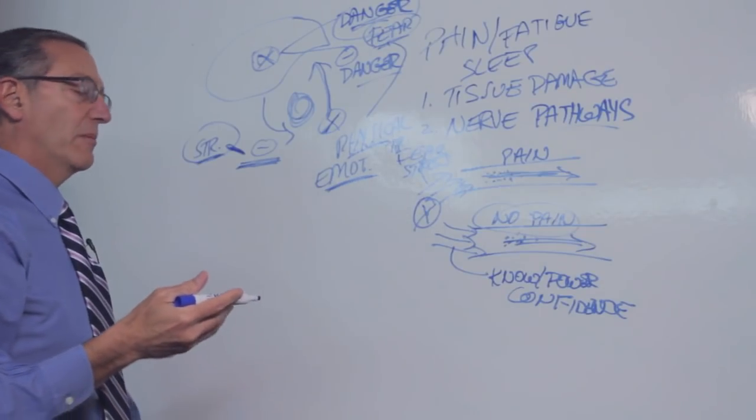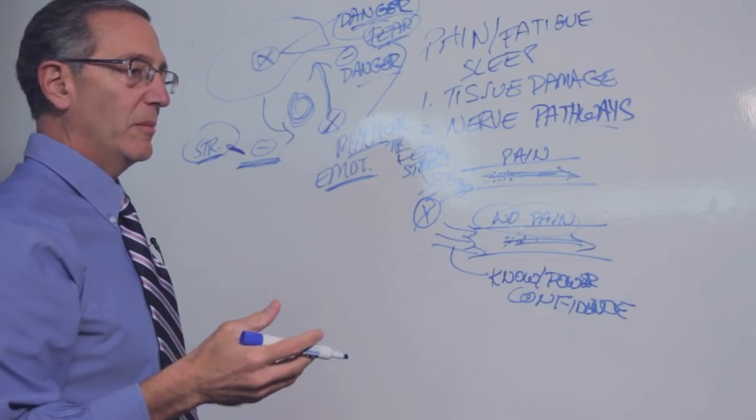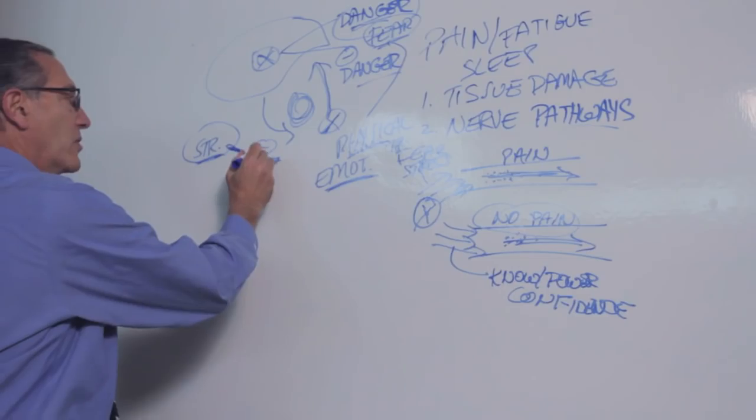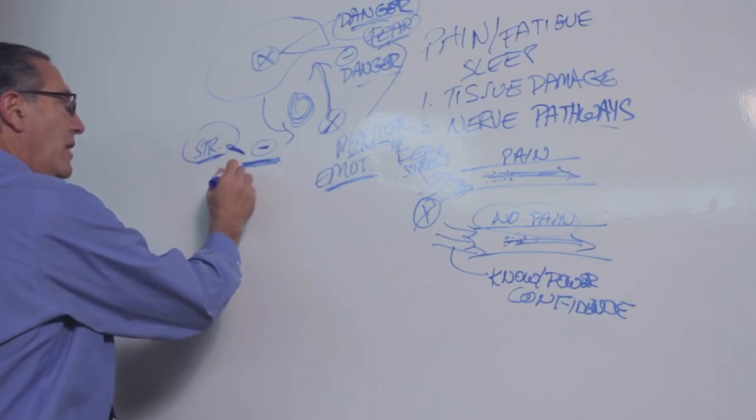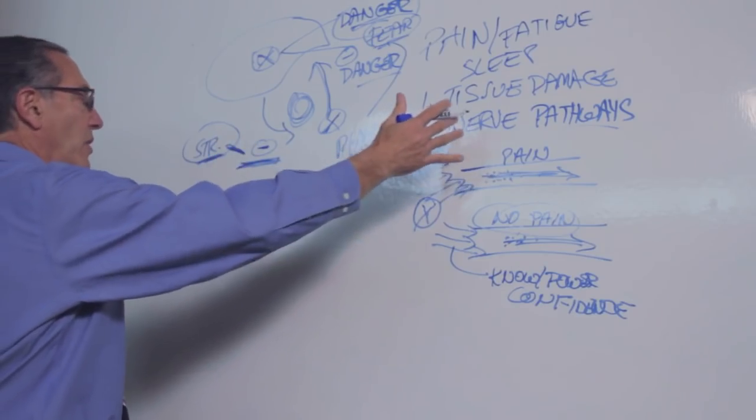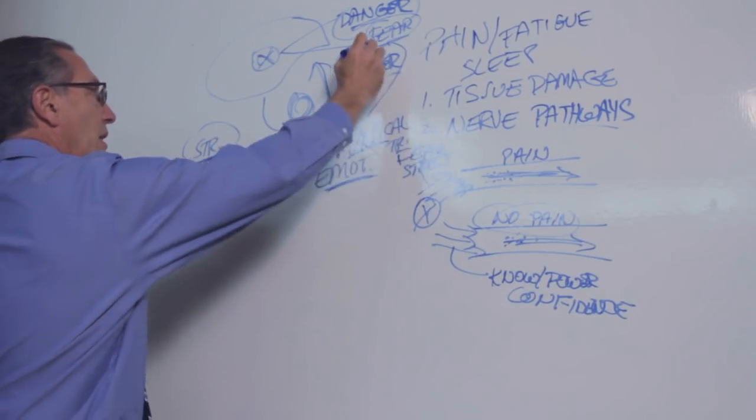Some children clearly develop sleep problems, anxiety problems, headaches, stomach pain. But oftentimes there's no symptoms, because what's happening is that the stress is interpreted by them as being normal and the symptoms are not emerging. But the fear pathway is developing.